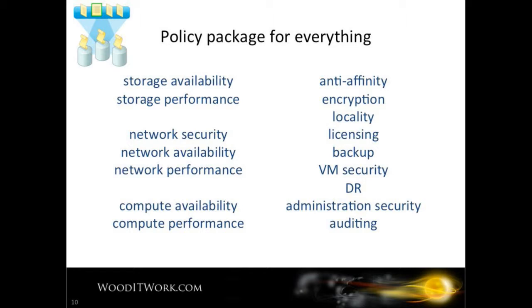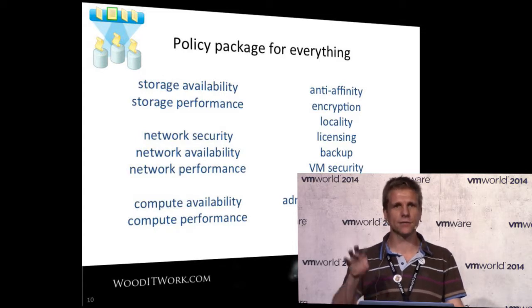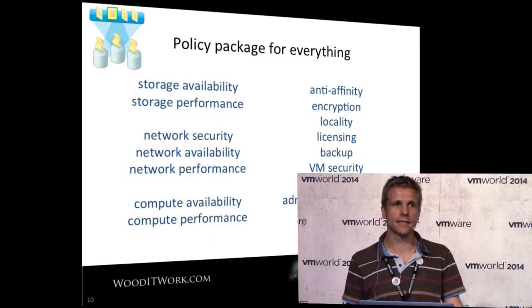You want all of this defined in policy - added as a tag on a VM, or via folders in vCenter. You can drag a VM into a folder or add a tag, and automatically that VM gets placed on a network, placed on a host, or placed on some kind of storage - all through policy. You're not managing the infrastructure parts separately. Things like affinity rules, encryption, licensing, backups - having them all encoded in policy is hugely beneficial. Auditors coming in to check things don't need to run reports on where VMs are sitting - they can just check the policy.